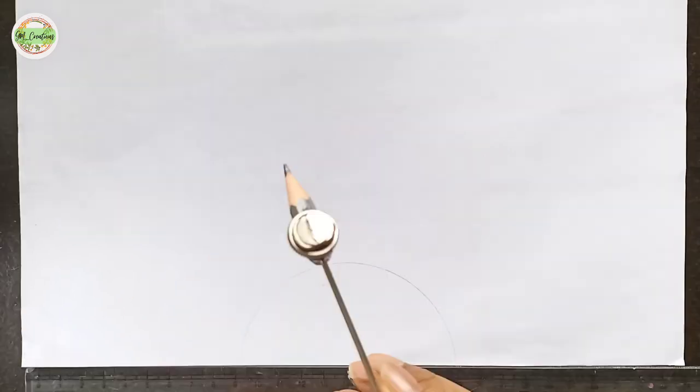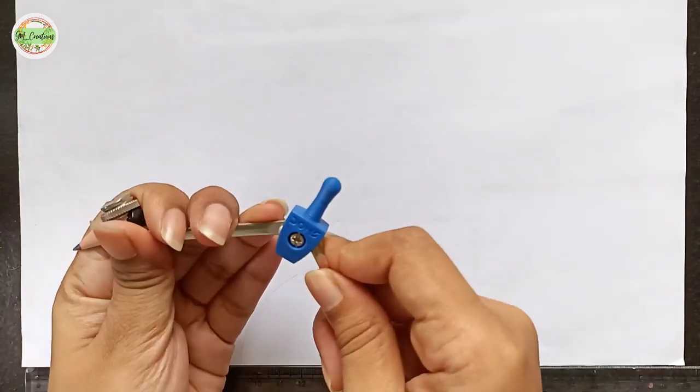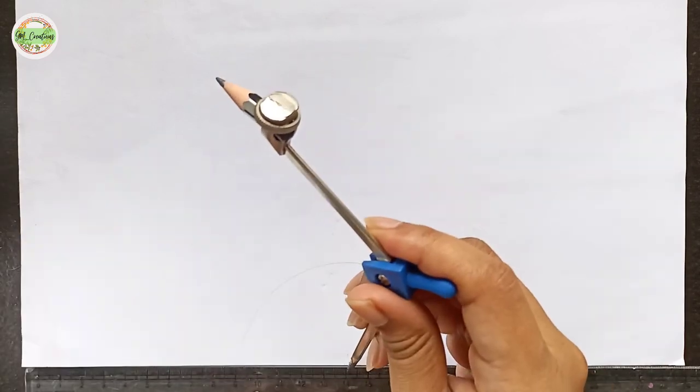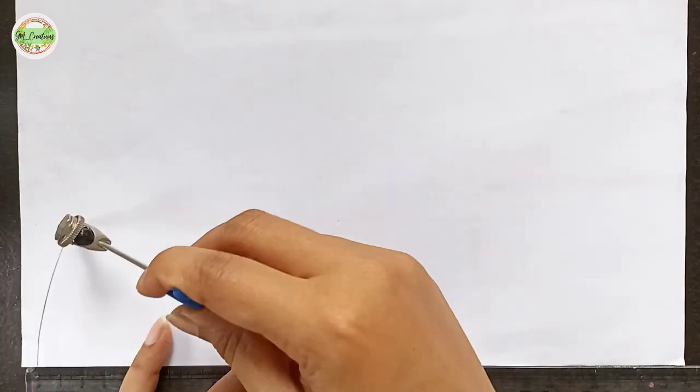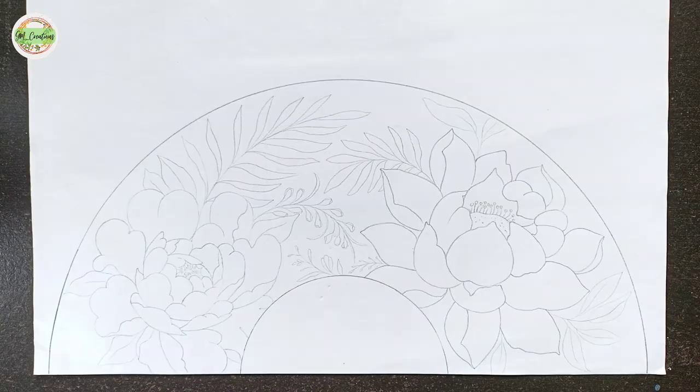Then using that same middle point on the ruler, draw another larger circle. This will serve as your paper for making the fan. Now you can draw any picture and color it.